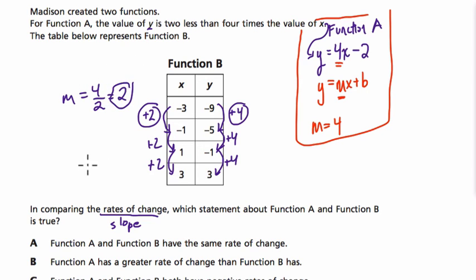So the slope for function B is less than the slope for function A, or the rate of change. So here, they can't have the same rate of change. Function A does have the greater rate of change. So that's the answer. All right, I hope this helped.